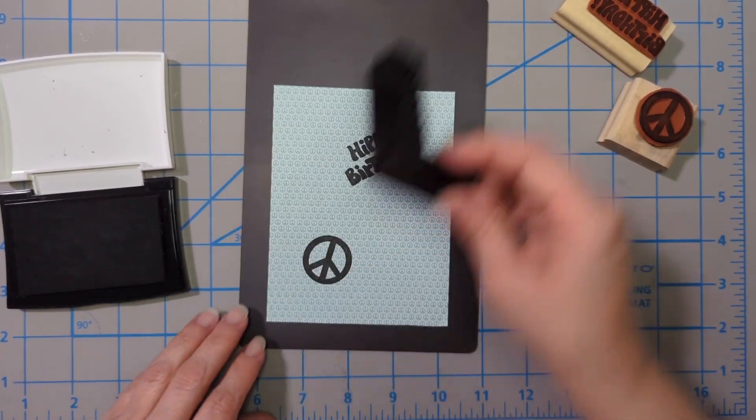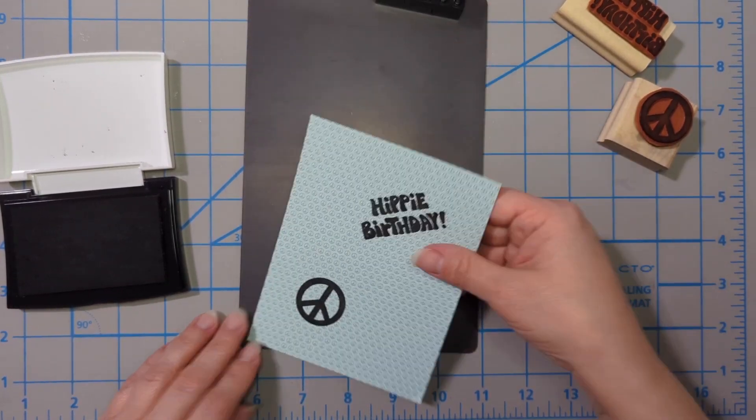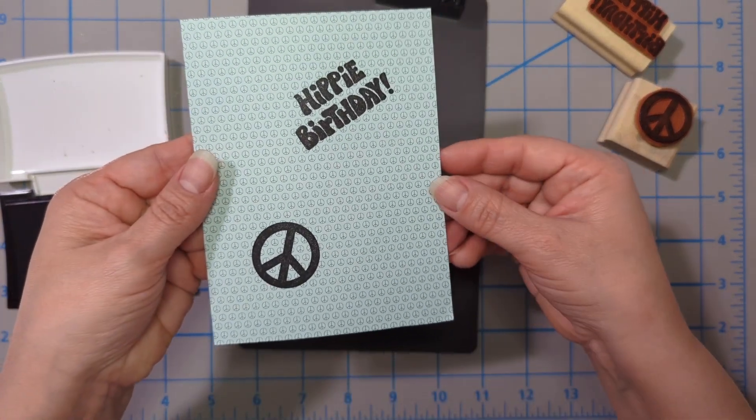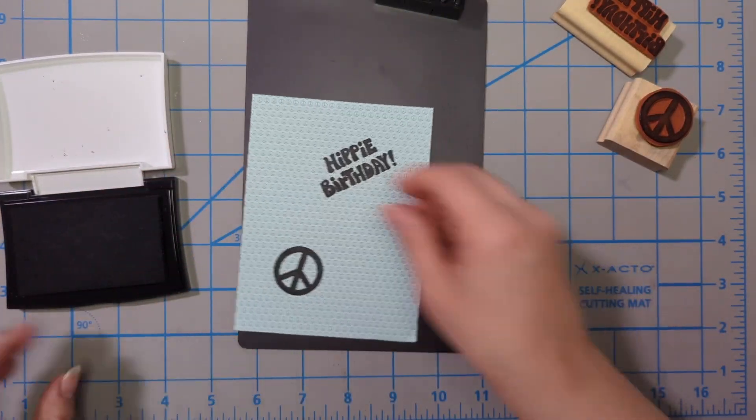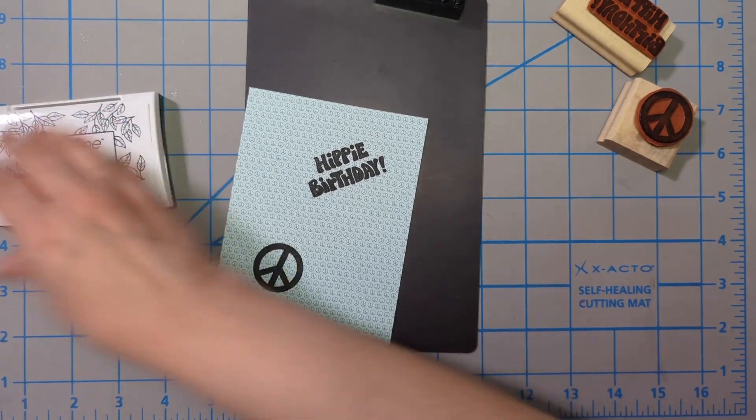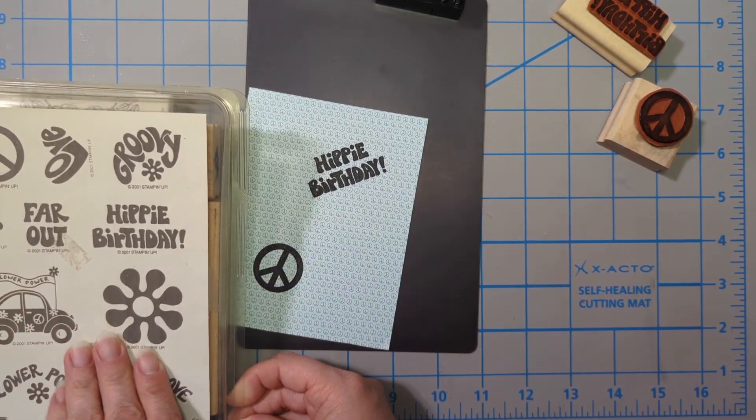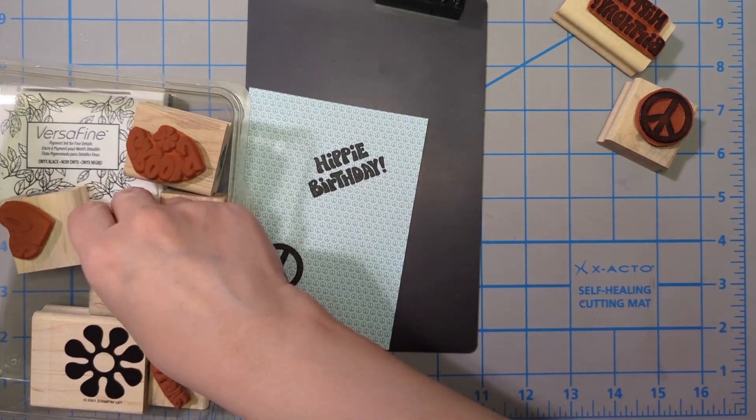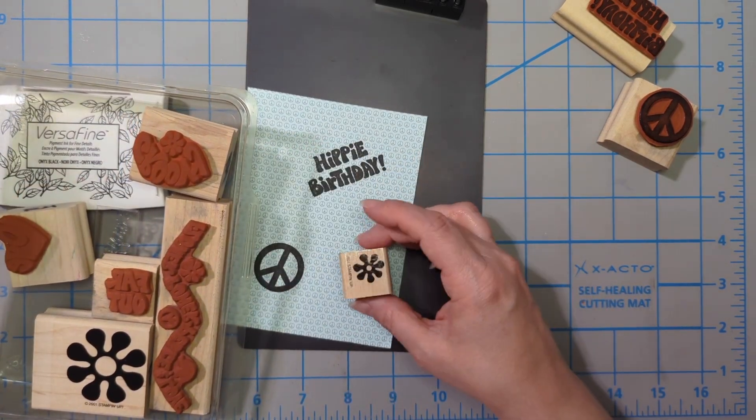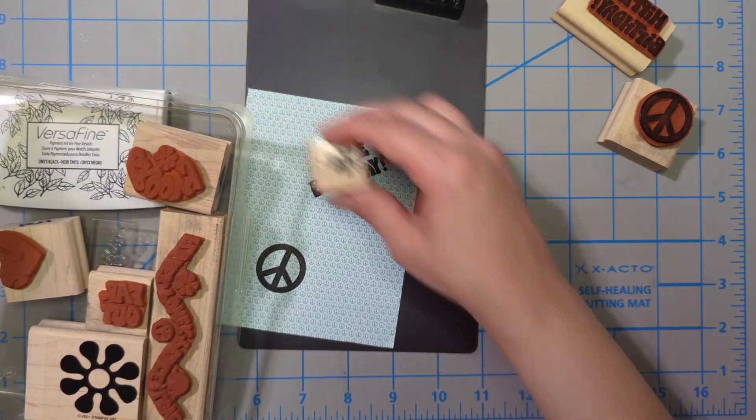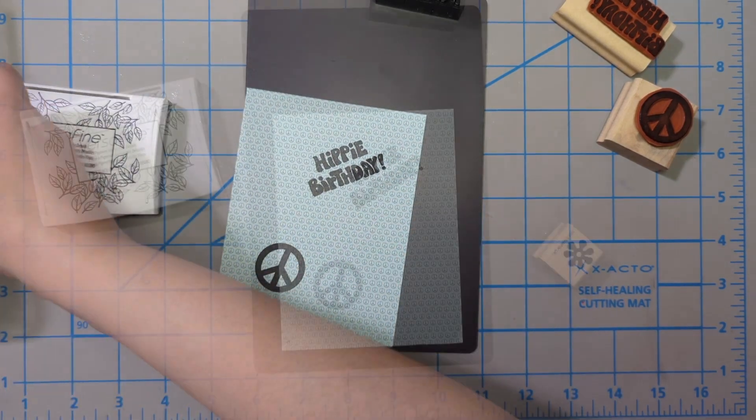So I positioned my stamps. I got them just where I wanted and I think that looks super cute. Look at that. But it still feels like there's something missing. So I'm gonna go back to that stamp set and see if there's something else that can fill in some of those empty spaces and I find this little flower stamp.